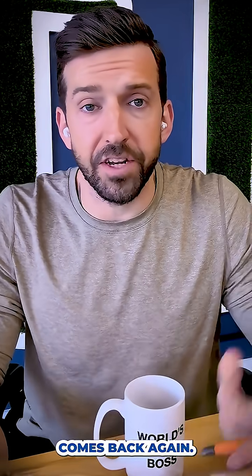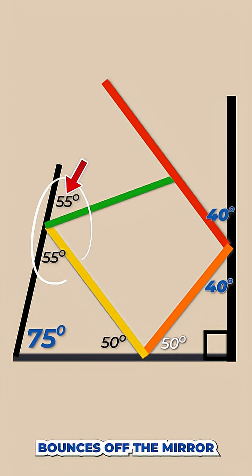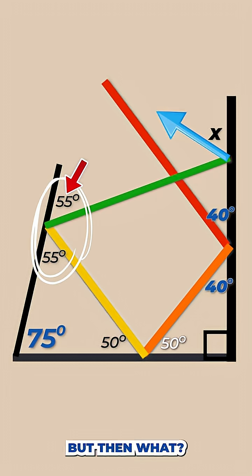Hey look, our friend the law of reflection comes back again. So the green ray bounces off the mirror also at an angle of 55 degrees. But then what?